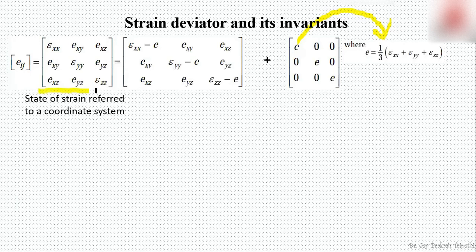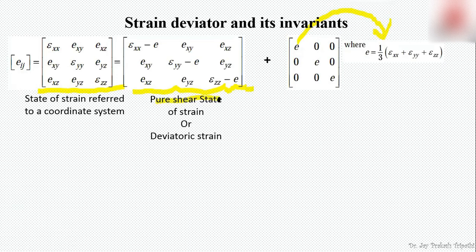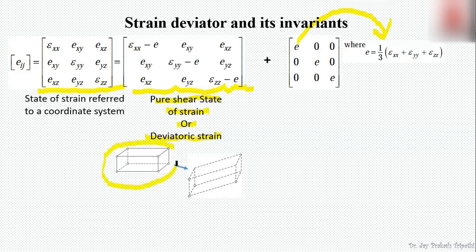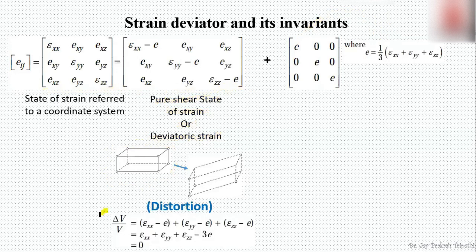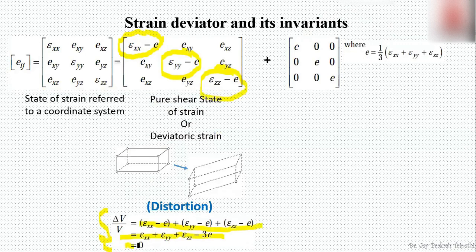The first component, corresponding to a coordinate system, is known as the pure shear state of strain, also called deviatoric strain. When this type of strain is applied to a parallelepiped or any elemental body, it results in deformation in shape but the volume of that element remains the same. There will be no volumetric strain, as the summation of the normal strain components produces zero.